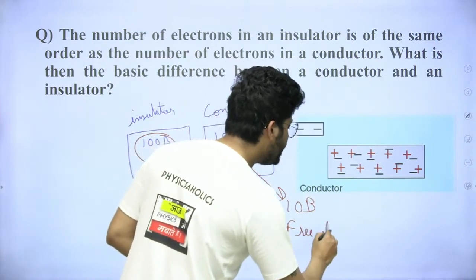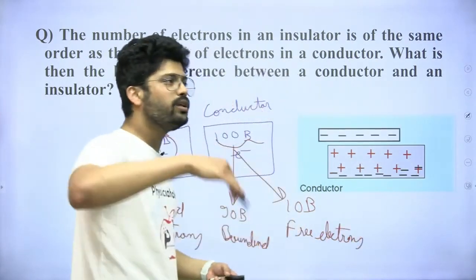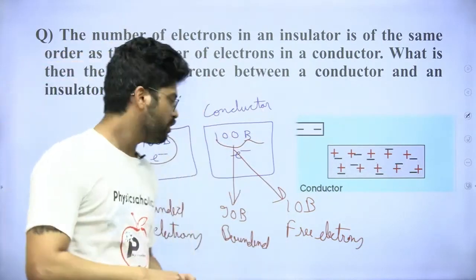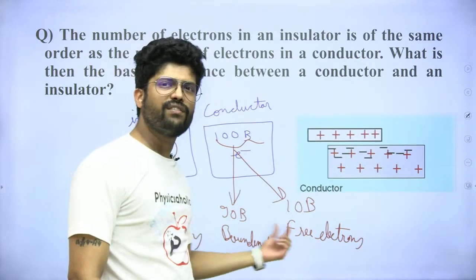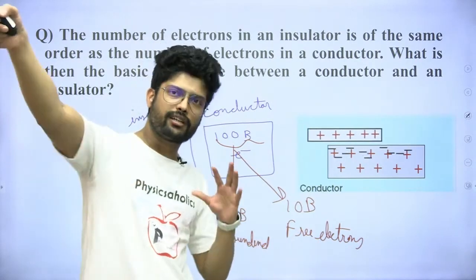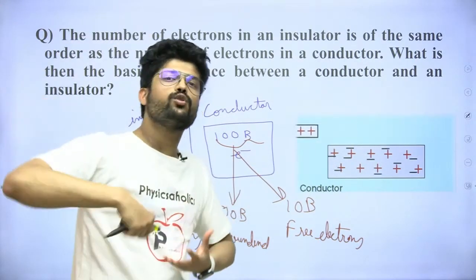There is something called free electrons and bounded electrons. We can define this on a good level. If you call it as valence band, it is called conduction band. Valence band, conduction band - this idea is called semiconductor. This is the best method of understanding.